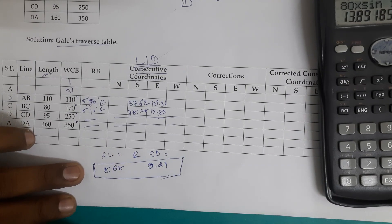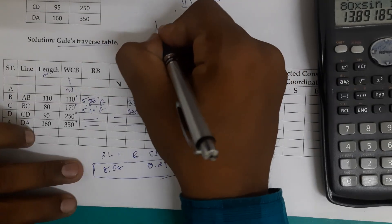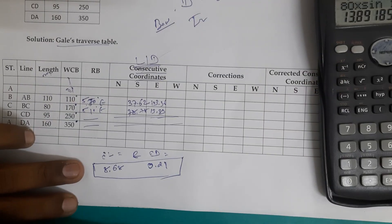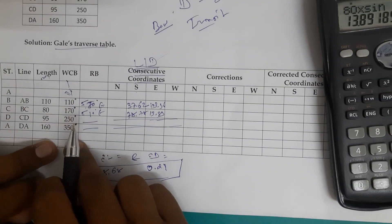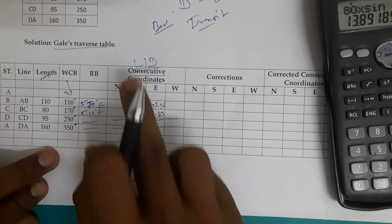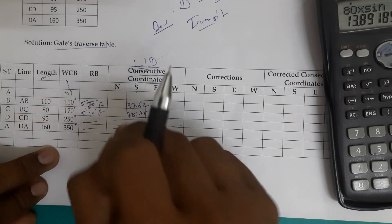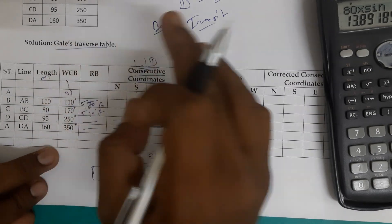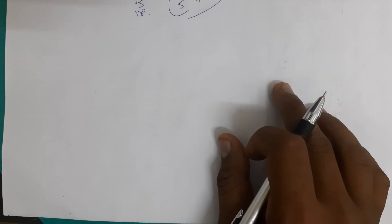To balance the traverse, a correction must be applied. We use the transit rule here because the angle and latitude are both given. In the transit rule, we use the latitude of each line along with the total arithmetic sum of all latitudes to compute the correction.